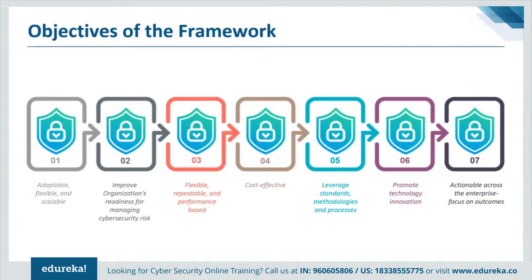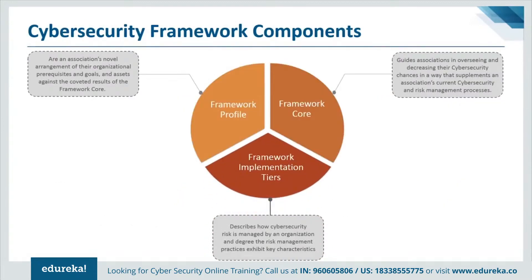Now let's discuss the components of the NIST cybersecurity framework. The framework consists of three main components: the core, implementation tiers, and profiles. The framework core provides a set of desired cybersecurity activities and outcomes using common language that is easy to understand. The core guides organizations in managing and reducing their cybersecurity risks in a way that complements an organization's existing cybersecurity and risk management processes.